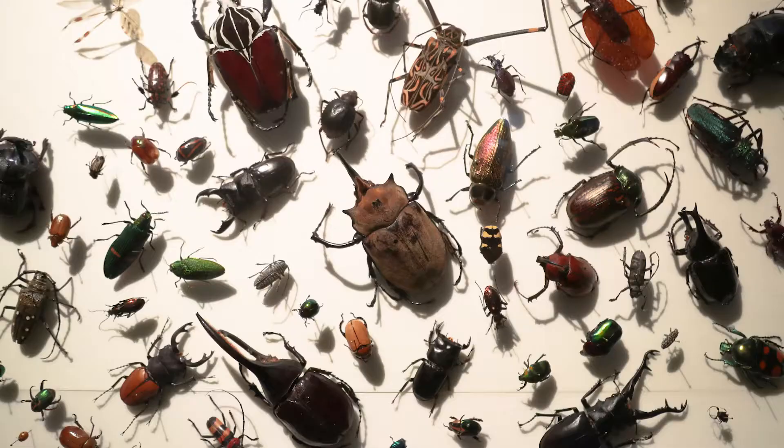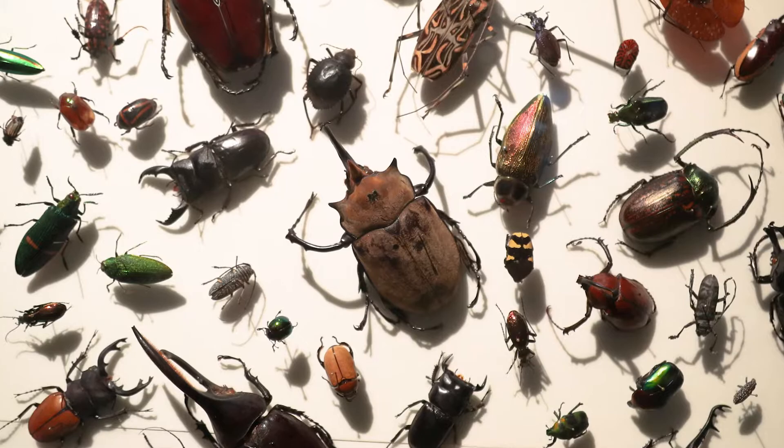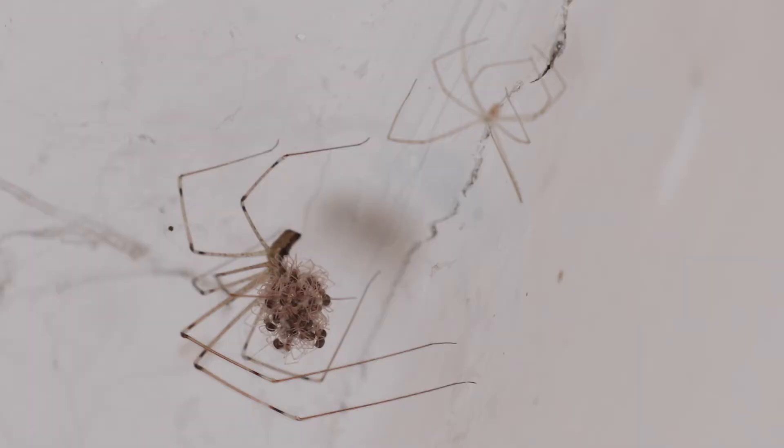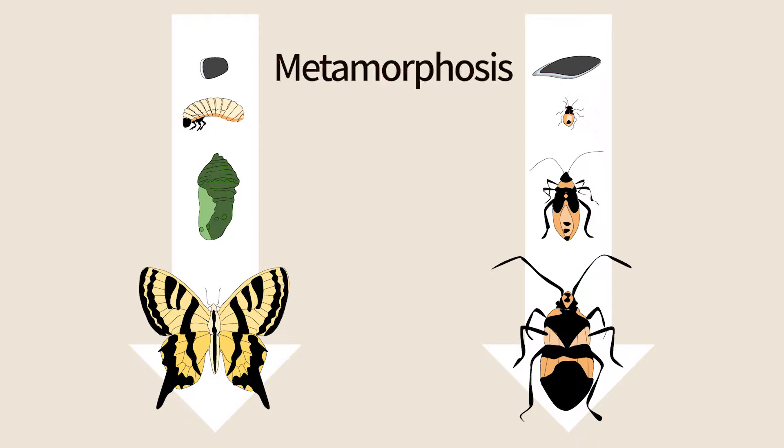Insects have a rigid external skeleton that protects them, stabilizes their body, and prevents dehydration. This exoskeleton, however, restricts their growth and development. To grow and develop, insects and other arthropods have to replace their skeleton by molting multiple times.